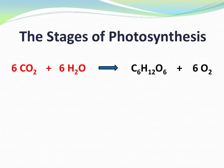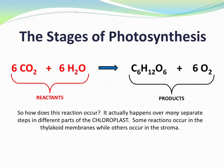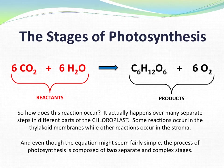Here's that familiar equation for photosynthesis: 6CO2 plus 6H2O gets turned into C6H12O6 plus 6O2. So how does this reaction occur? It actually happens over many separate steps in different parts of the chloroplast. Some reactions occur in the thylakoid membranes, while others occur in the stroma. And even though the equation might seem fairly simple, the process of photosynthesis is composed of two separate and complex stages.